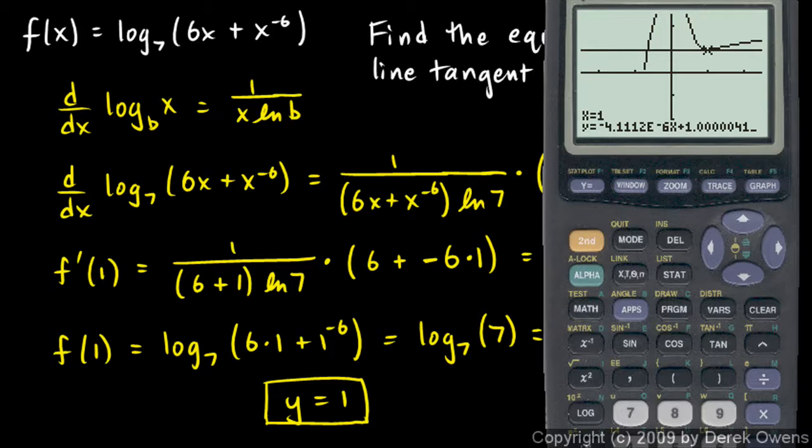And it gives me the equation right down there. Now this is not exact. This is just a numerical approximation. But look at the number. It says y equals negative 4.112 times 10 to the negative 6x. That 4.112 times 10 to the negative 6 is approximately 0. And then this plus 1.000041, that's approximately 1.